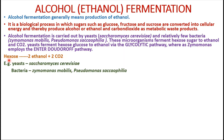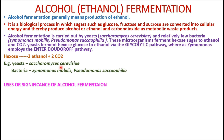These microorganisms ferment hexose sugars such as glucose, fructose, and sucrose to ethanol and carbon dioxide. Any hexose carbohydrate gives rise to two molecules of ethanol and two molecules of carbon dioxide. Yeast converts hexose to ethanol via the glycolytic pathway or glycolysis, whereas the bacterium Zymomonas mobilis employs the Entner-Doudoroff pathway. Before going into detail, let's have a glance at the significance of alcohol fermentation.